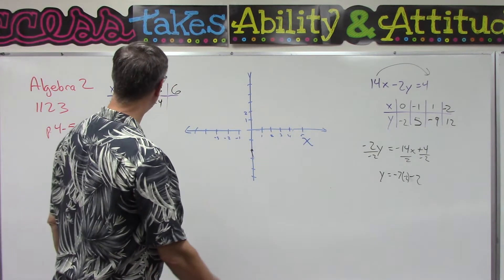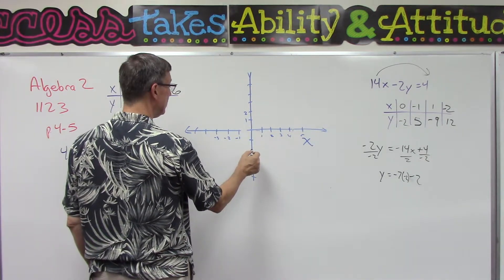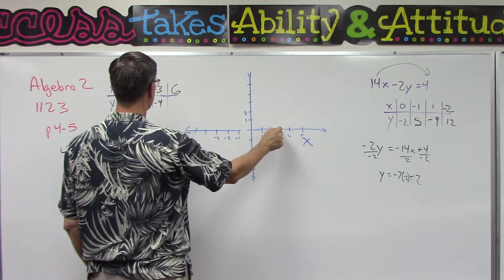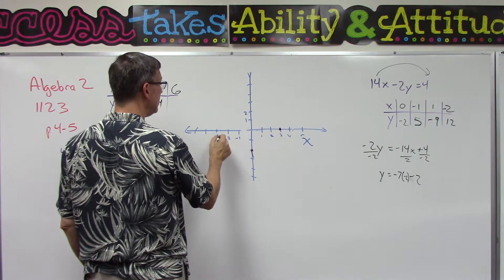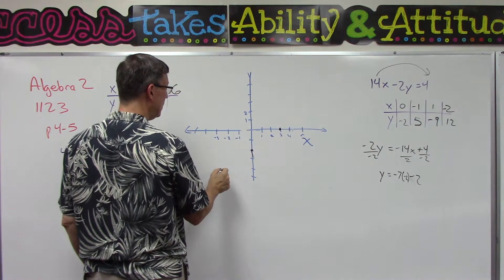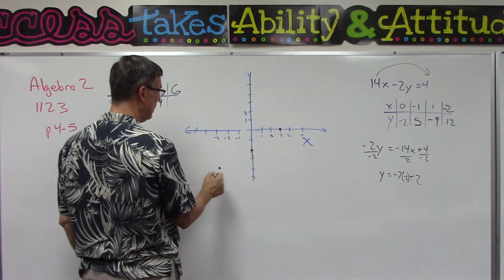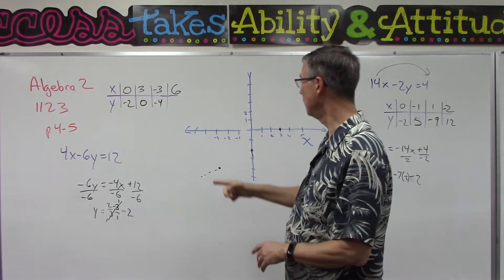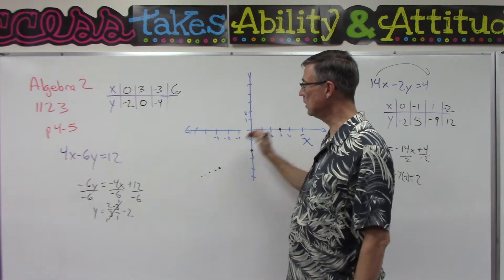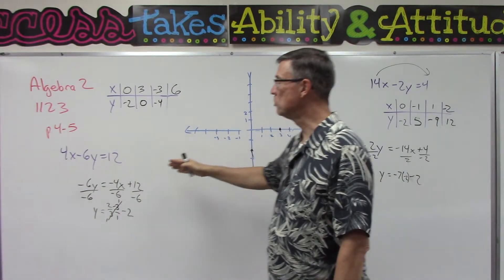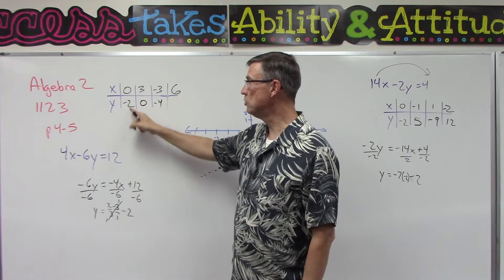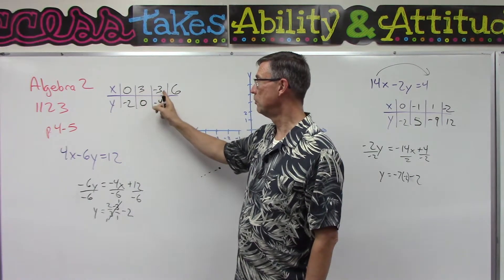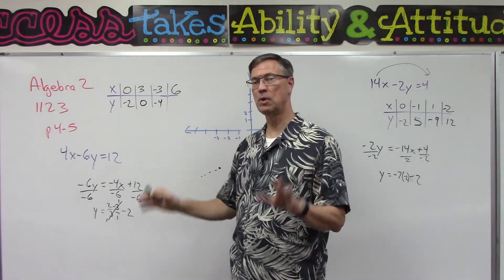So my points are (0, negative 2), (3, 0), and (negative 3, negative 4). Notice how they all line up. Finish that one out, graph those points, and connect them with a line. See how easy that is — first solve for y, always use 0, and if you have a denominator with the x term, use multiples of that denominator as your x values. That way you won't have to graph any fractions.